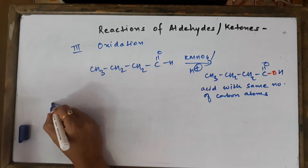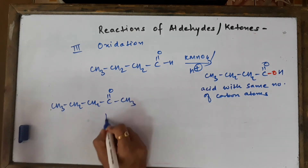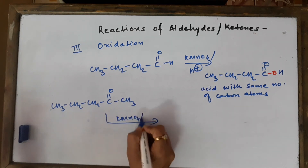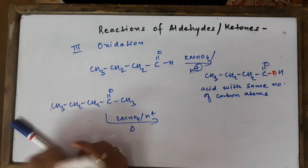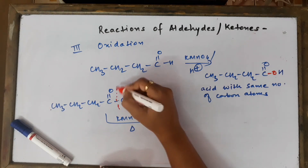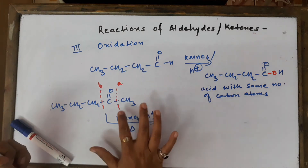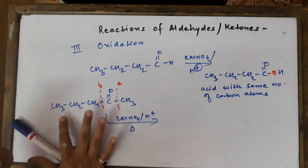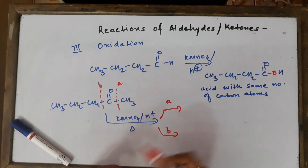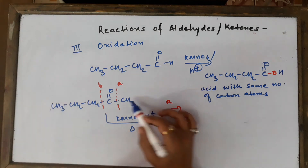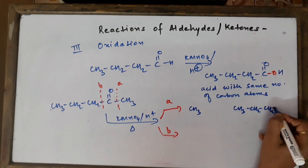Now let's oxidize a ketone with a strong oxidizing agent like KMnO₄ under drastic conditions. Because bond cleavage is required, we must break either bond A or bond B in the ketone. Breaking bond A gives one small fragment and one larger fragment; breaking bond B gives two different fragments. We write both pathways: pathway A and pathway B.